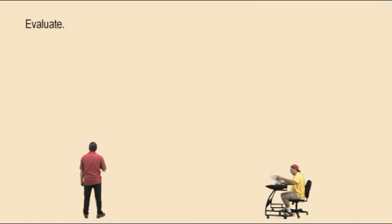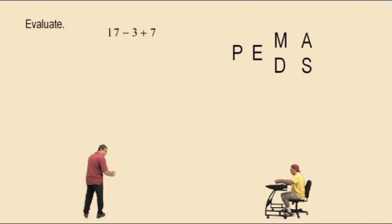All right, so let's get started with our first problem right here. Evaluate. Find the value of this expression. 17 subtract 3 plus 7. Now notice, over there, we have the acronym, and here's the problem. But notice, we have a subtraction and addition. And which one comes first, Charlie, working left to right? Subtraction. That's right. So you must do the subtraction first before you do the addition.